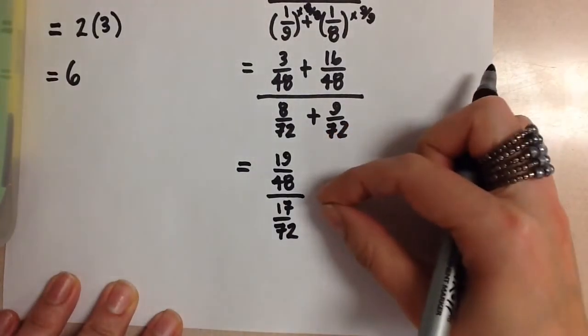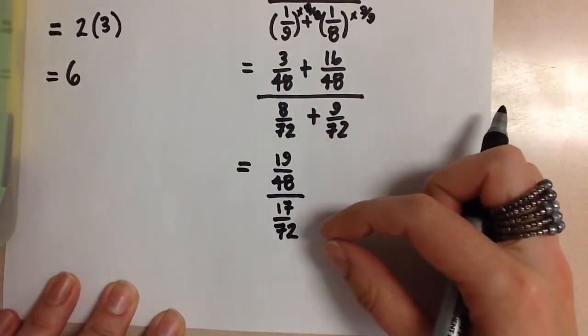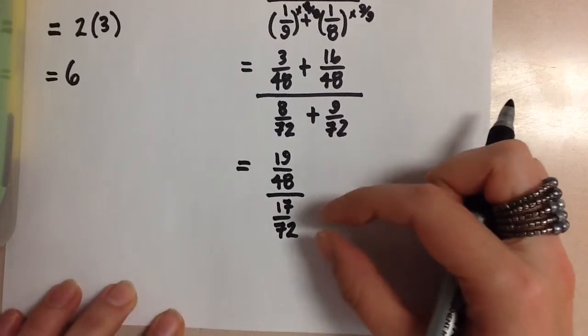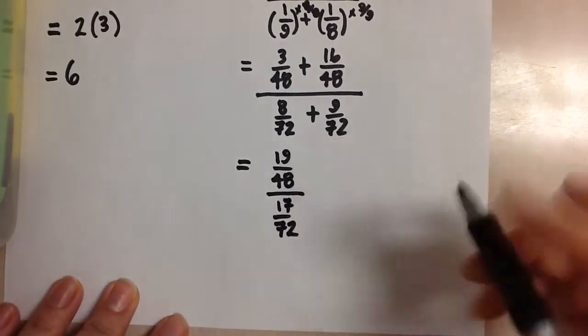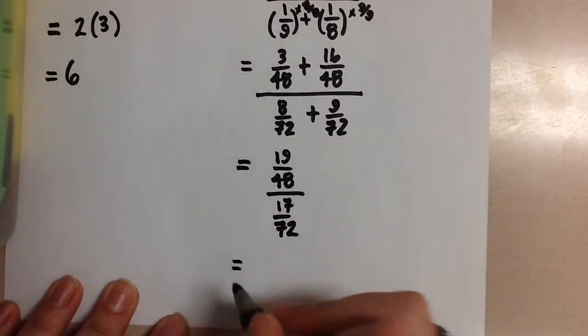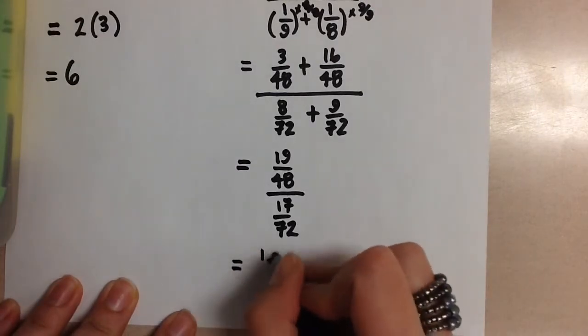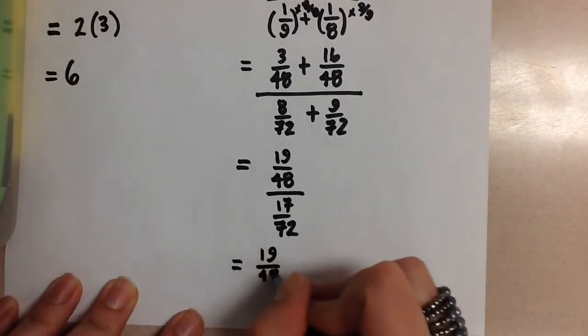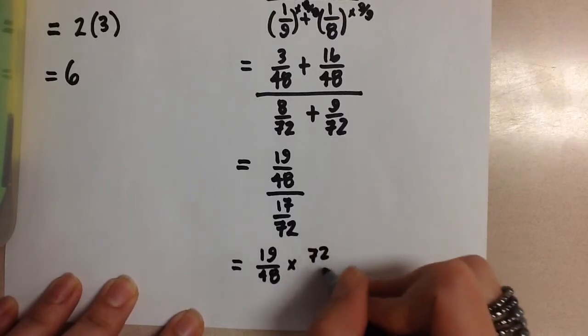And we know that when we have that we take the reciprocal of the second one and we multiply them together. So really we have here 19 over 48 times 72 over 17.